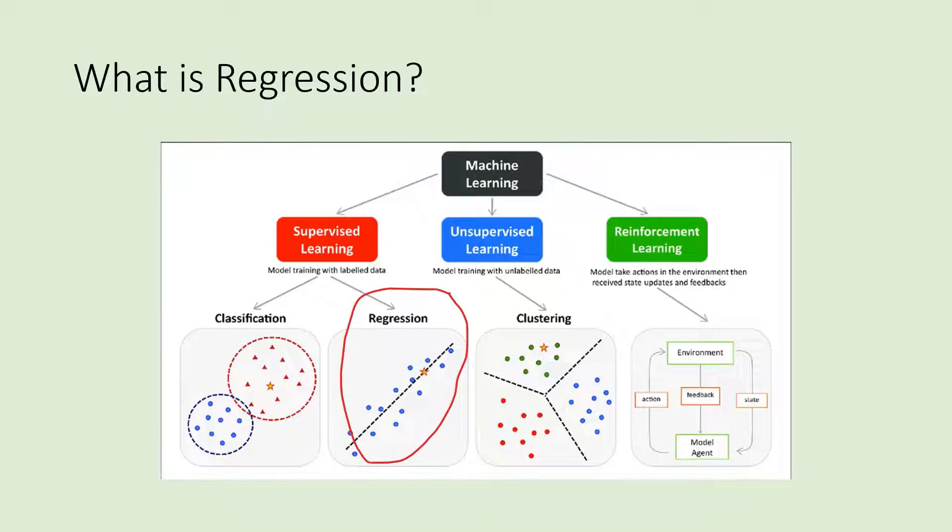In this lesson we will explain regression in machine learning. What is regression? Regression is one type of supervised learning. This technique is used to predict continuous outcomes, unlike classification when we predict categorical values.